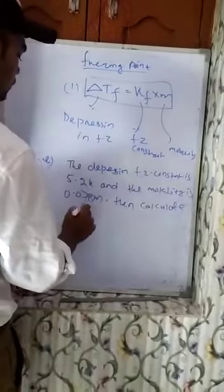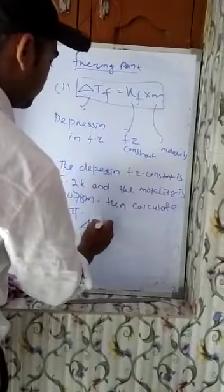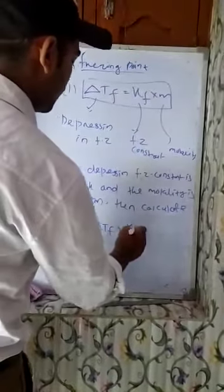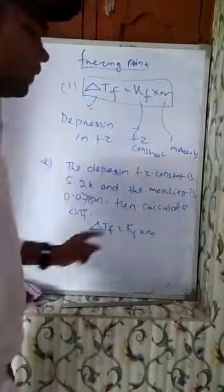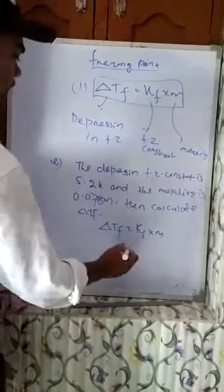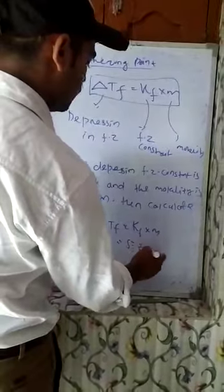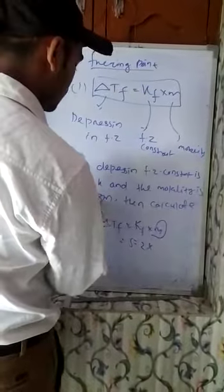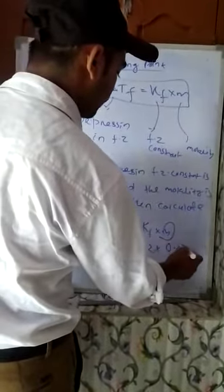So how to solve this question? Only use this formula: ΔTF = KF × m, where KF is the constant and m is the molality. So KF here is 5.2 and m means molality is 0.078.